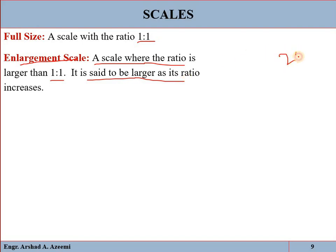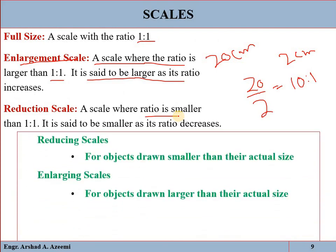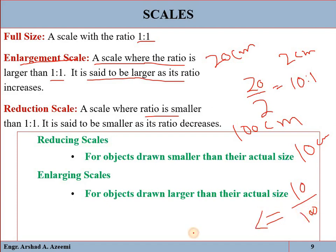For example, if you have a 2 cm object and you have drawn it as 20 cm, the drawn is 20 cm and the actual is 2 cm, so the ratio is 10:1 — that is an enlarging scale. For a reducing scale: if we have 100 cm actual and draw it as 10 cm, then 10 divided by 100 equals 1:10 — a reducing scale. Reducing scale means the object is drawn smaller than actual size; enlarging scale means the object is drawn larger than actual size.